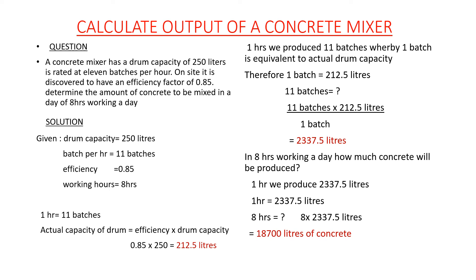We are told that in one hour we are producing 11 batches, so we can find how many liters of concrete we are going to get in a day. It's 11 batches multiplied by 212.5 liters, which is the actual drum capacity, divided by one batch. We get 2337.5 liters. This is what we are able to produce in one hour with 11 batches.